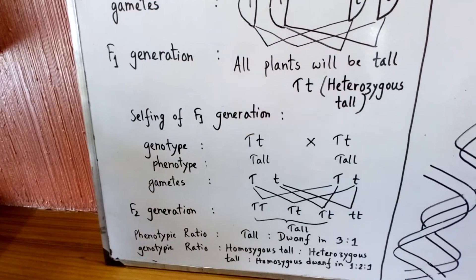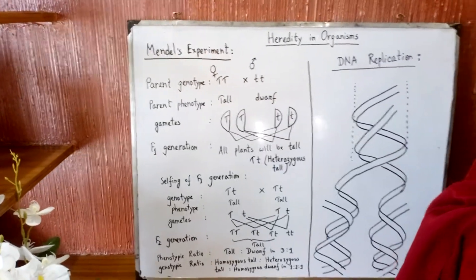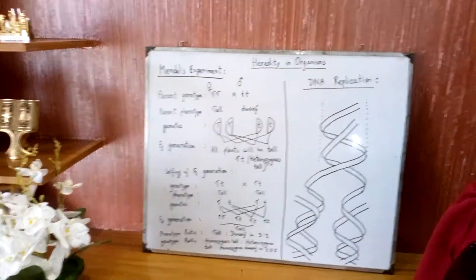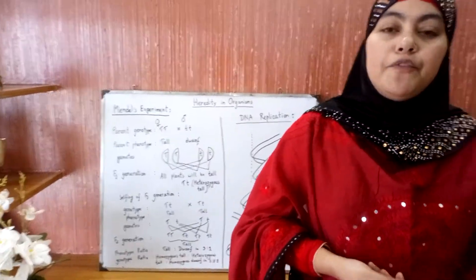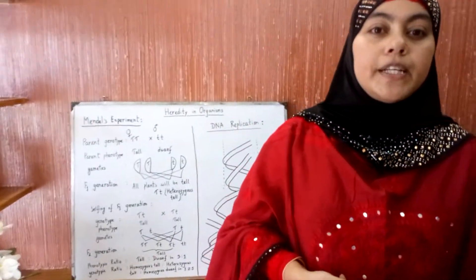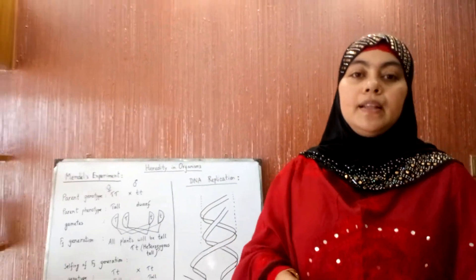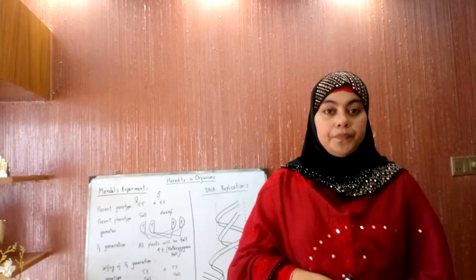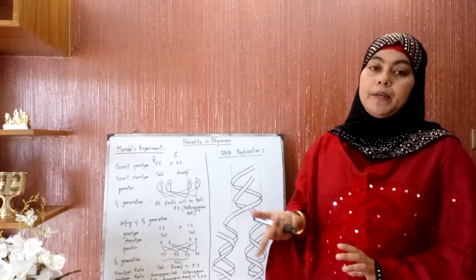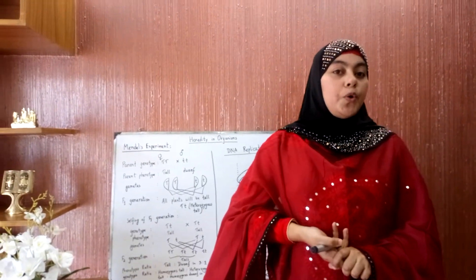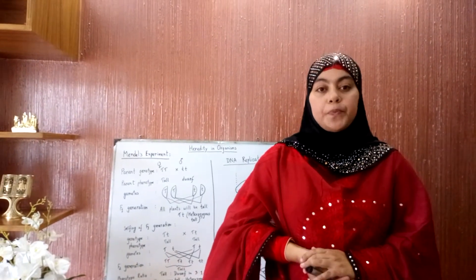Mendel's experiment is nowadays used for the development of animals and plants through artificial hybridization. If we want to get improved characteristics in plants, this experiment helps a lot. In different sectors today, this knowledge of the experiment is used to understand how characteristics are transferred from parents to offspring.